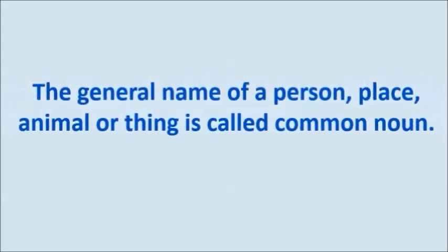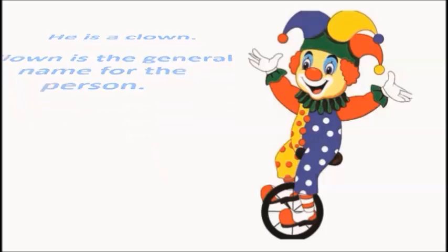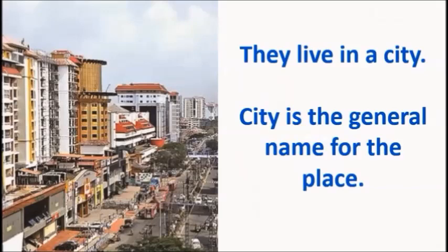The general name of a person, place, animal or thing is called Common Noun. For example, 'He is a clown.' In this sentence, we are talking about a clown. The clown is a general name for the person. Second, 'They live in a city.' In this sentence, we are talking about a city. City is a general name for the place.